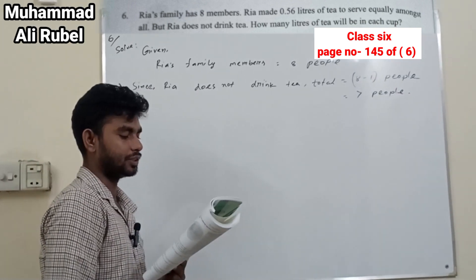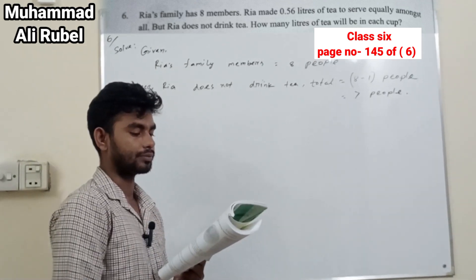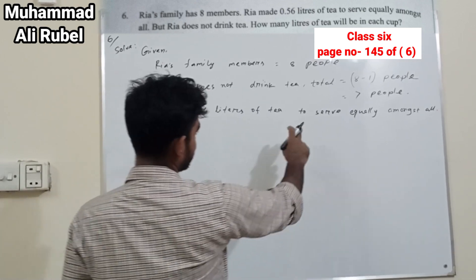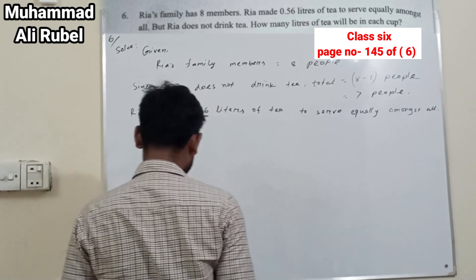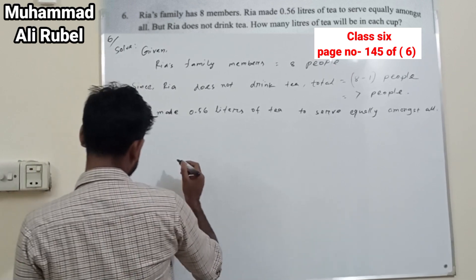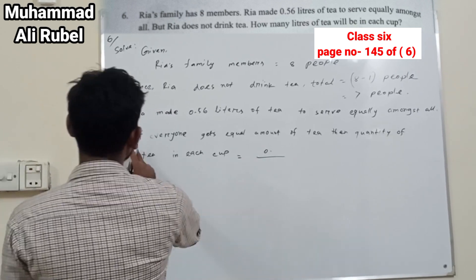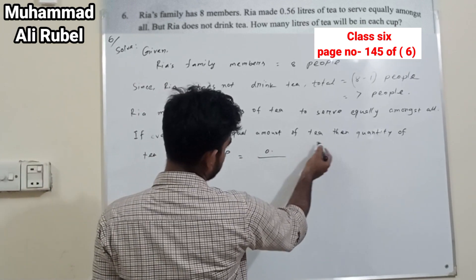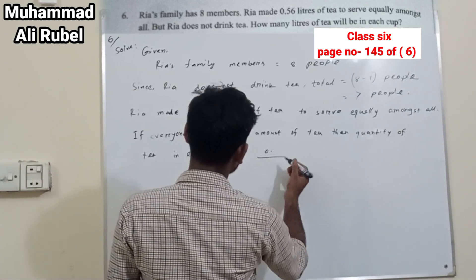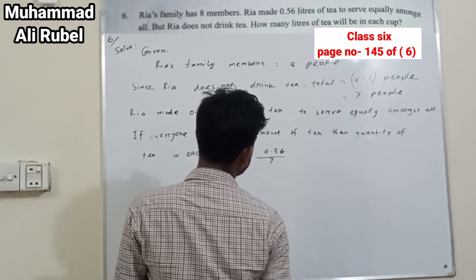After that, Ria made 0.56 liters of tea to serve equally among all people. If everyone gets an equal amount of tea, then the quantity of tea in each cup will be 0.56 over 7 people.